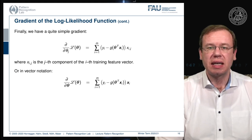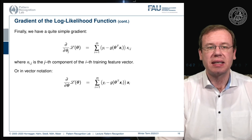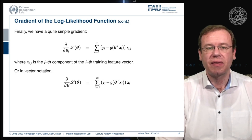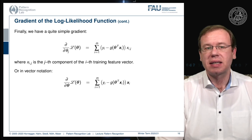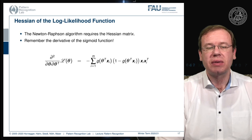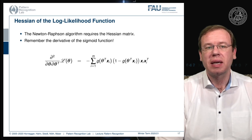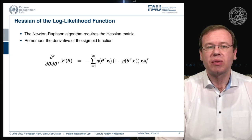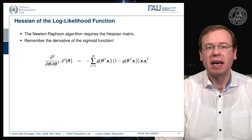We essentially have to compute the derivative of the derivative. The derivative operator is linear, and the terms that involve yi and xi cancel out since they are not related to theta anymore. Using the derivative of the sigmoid function again, this brings us to the second order derivative — the Hessian matrix. This is also a rather straightforward formulation.